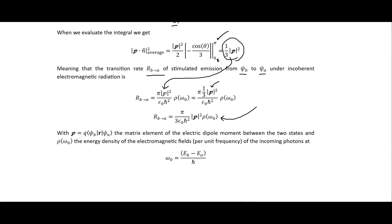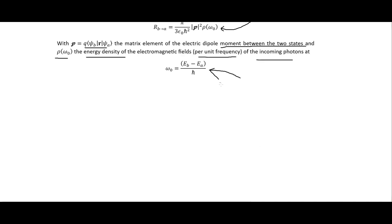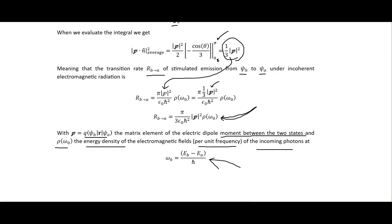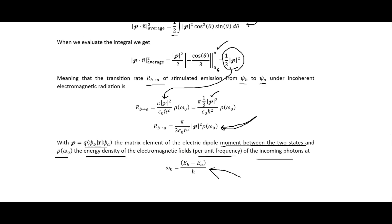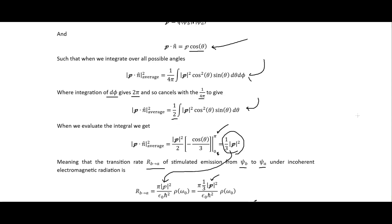We simplify to get the final result where the matrix elements are for the electric dipole moment between the two states, and rho of omega sub naught is the energy density of the electromagnetic field per unit frequency — the energy density of all the different frequencies of the incoming photons. This gives the transition rate for our electron in incoherent electromagnetic radiation for stimulated emission.